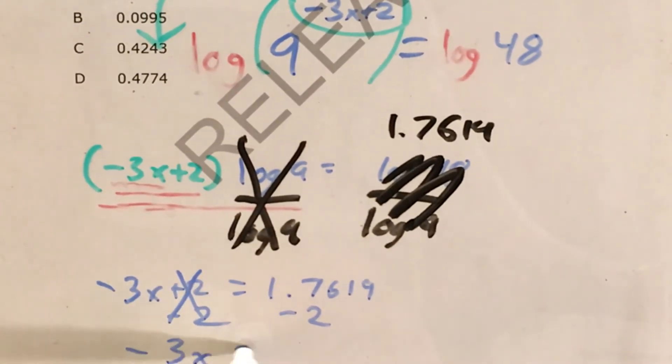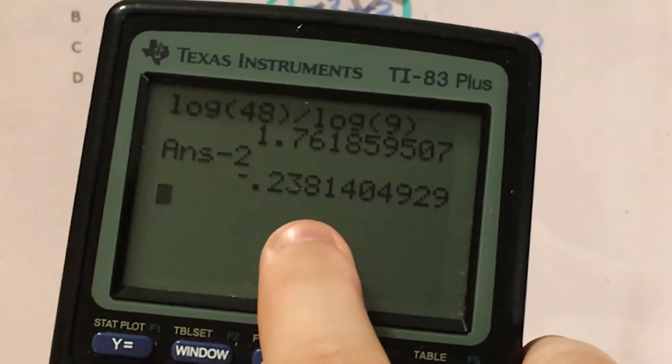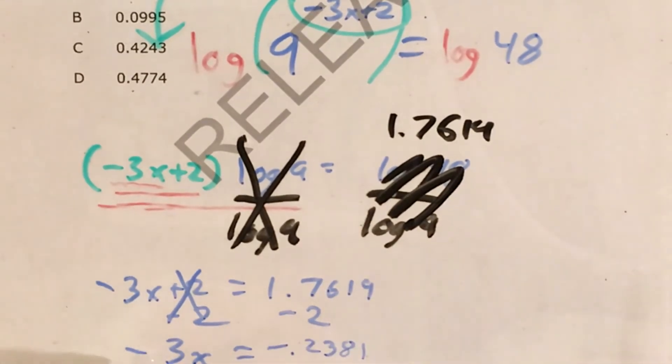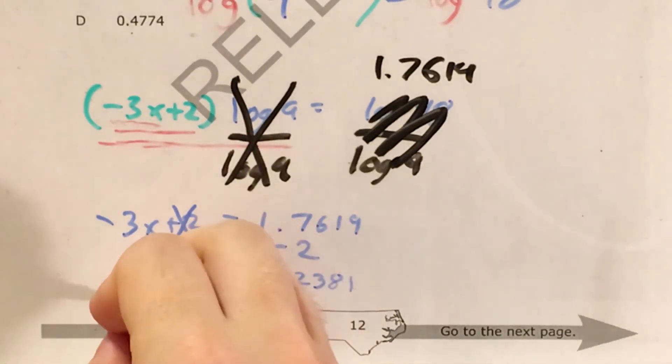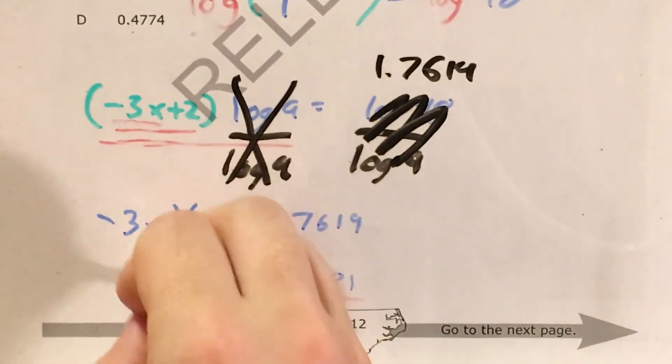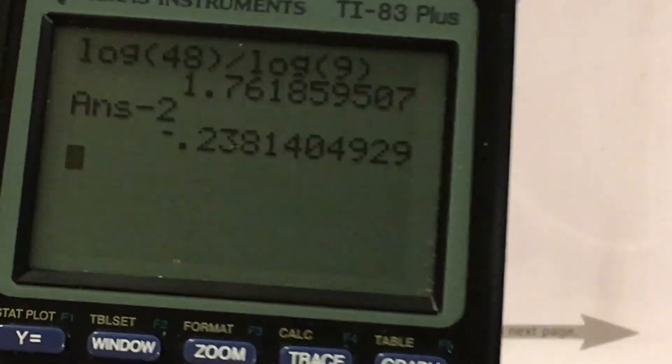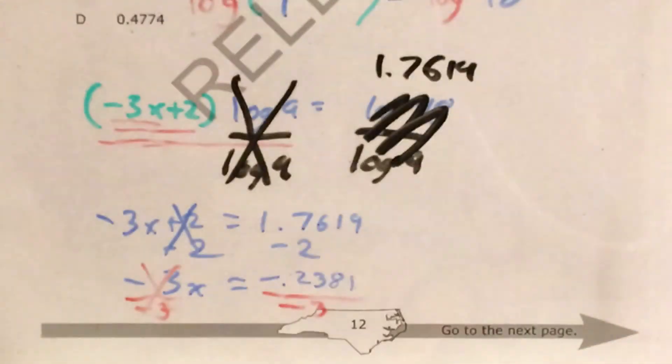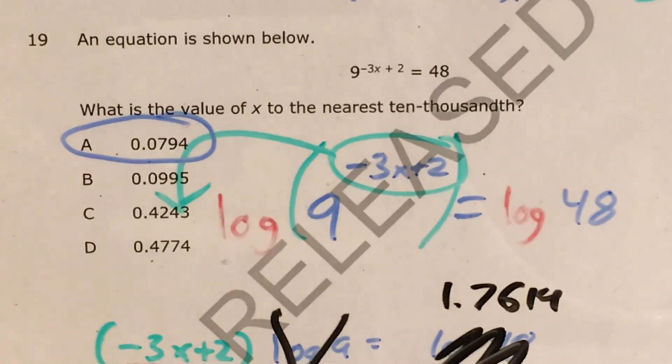So negative 3x equals, and then this junk minus 2 is negative 0.2381. And now I just need to get rid of this negative 3 that I'm multiplying, so I divide by negative 3. Negative 3 divided by negative 3 cancels, and then this monstrosity divided by negative 3 is 0.0794. And thank goodness that this matches my answer choice of A, so A is my answer.